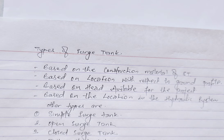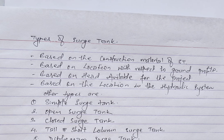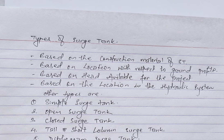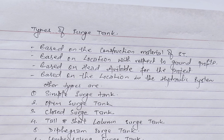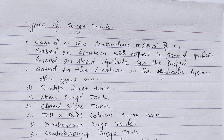Tall column source tanks have a tall column of water providing a large cushion volume to absorb and release pressure changes in tall pipelines, whereas short column source tanks are suitable for systems with lower vertical head requirements. Diaphragm source tanks use a flexible diaphragm to separate air and water, allowing for controlled expansion and contraction of the air volume to manage pressure fluctuations.